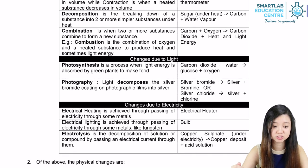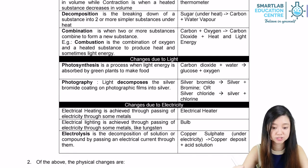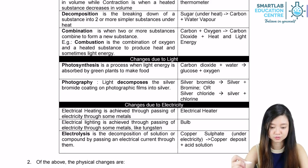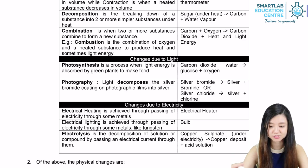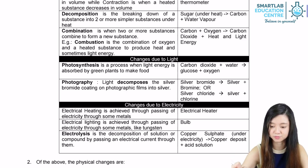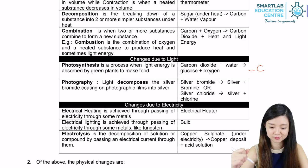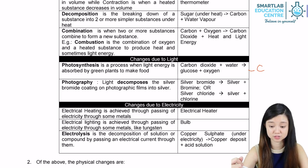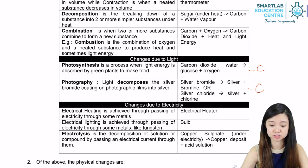Let us look at the changes due to light. Photosynthesis is a process where light energy is absorbed by green plants to make food. Because food is a new substance being formed, this is a chemical change. For photography, light actually decomposes the silver bromide coating on photographic films into silver. So again, this is a chemical change.